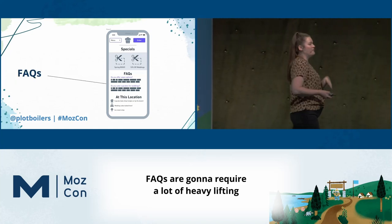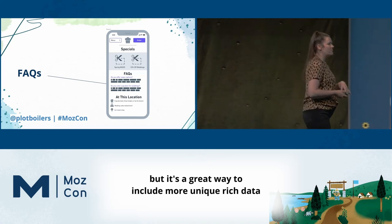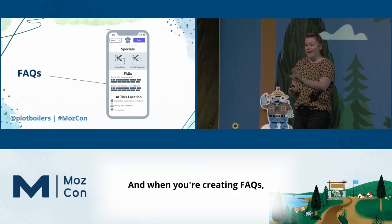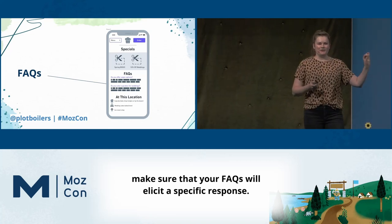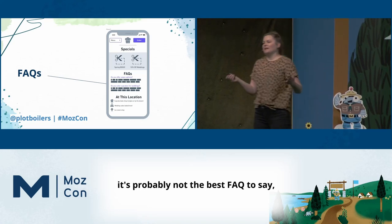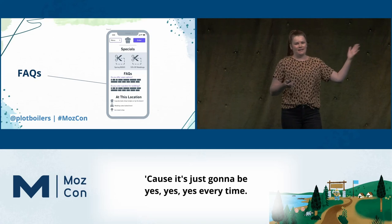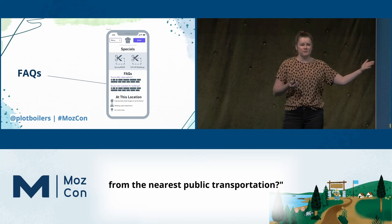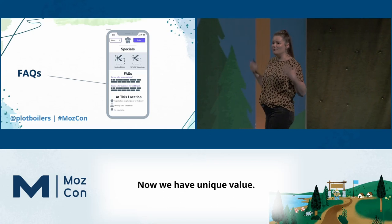Much like staff bios, FAQs are going to require a lot of heavy lifting on the part of your content writer, but it's a great way to include more unique, rich data on your location pages. When you're creating FAQs, make sure they will elicit a specific response. If you make gluten-free cupcakes at every location, asking 'do you have gluten-free cupcakes?' is not a good FAQ — it's just yes, yes, yes every time. Instead, ask something like 'how do I get to your storefront from the nearest public transportation?' because that answer will be unique across every single location.